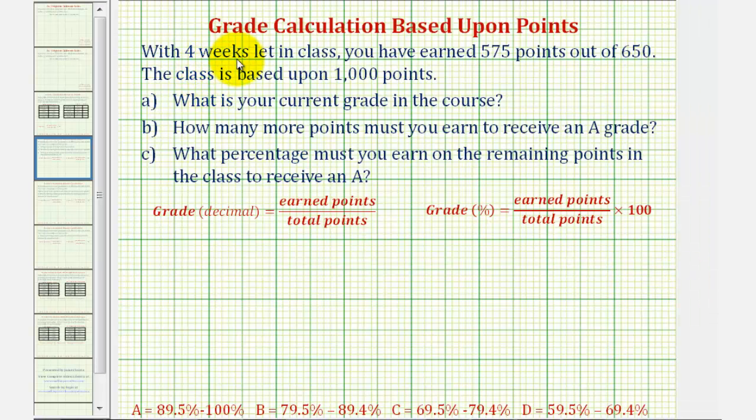In this problem, we will address several common grade questions for a course where the grade is based upon total points. With four weeks left in class, you have earned 575 points out of 650. The class is based upon 1,000 points.